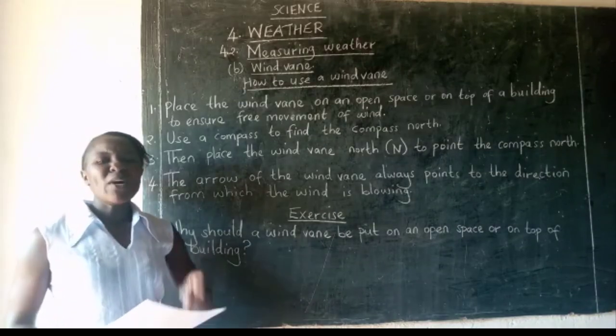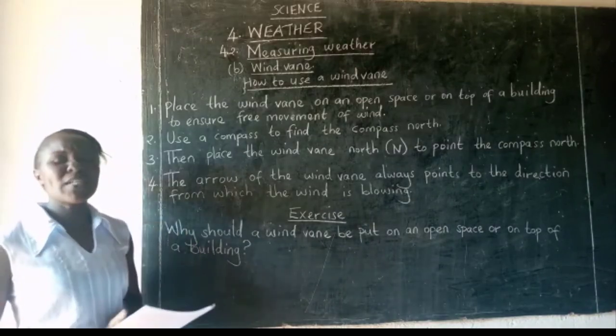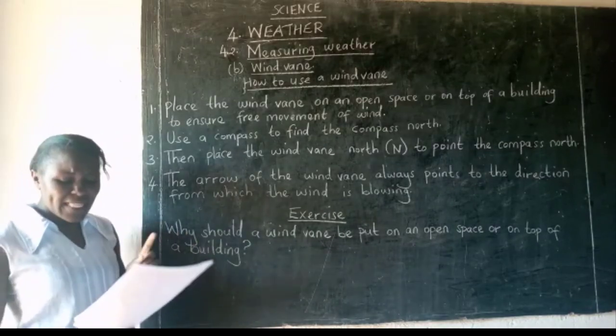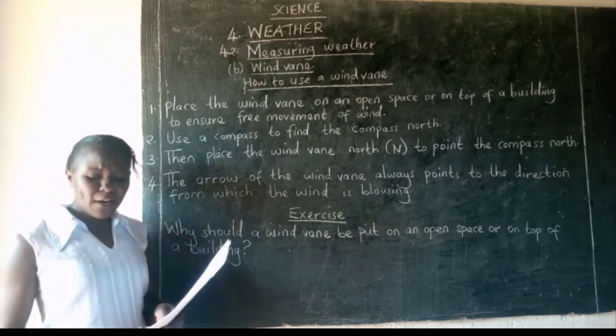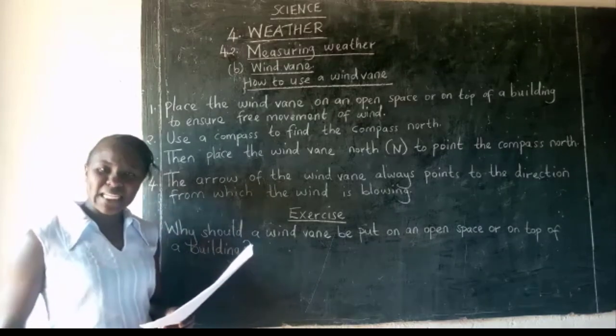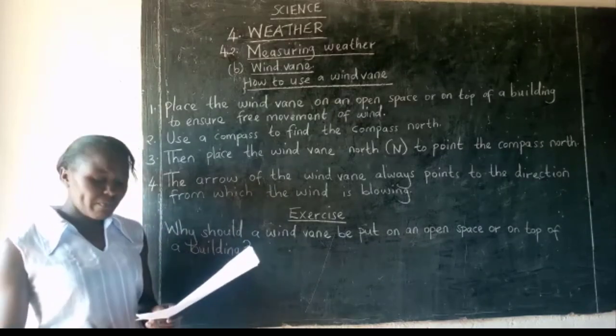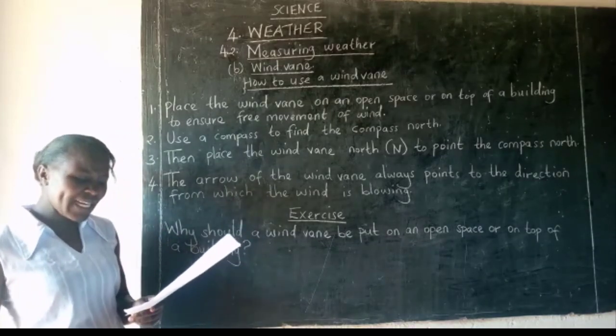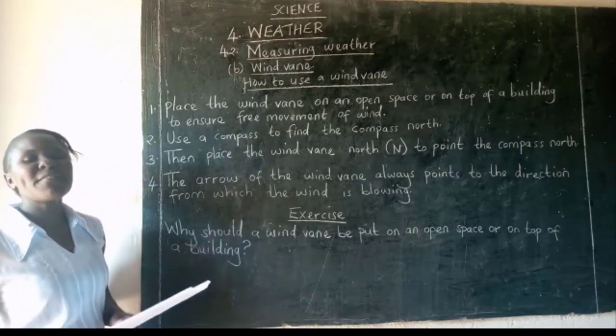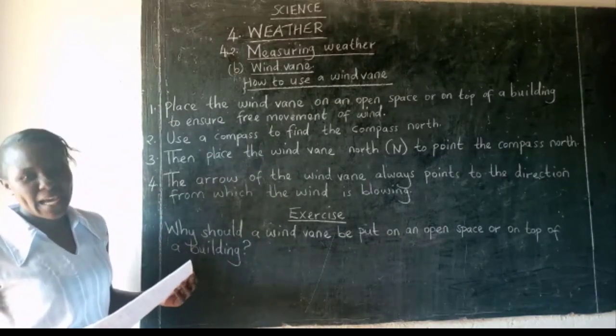What you are supposed to note is that the surface area of the tail should be larger than that of the arrow head.